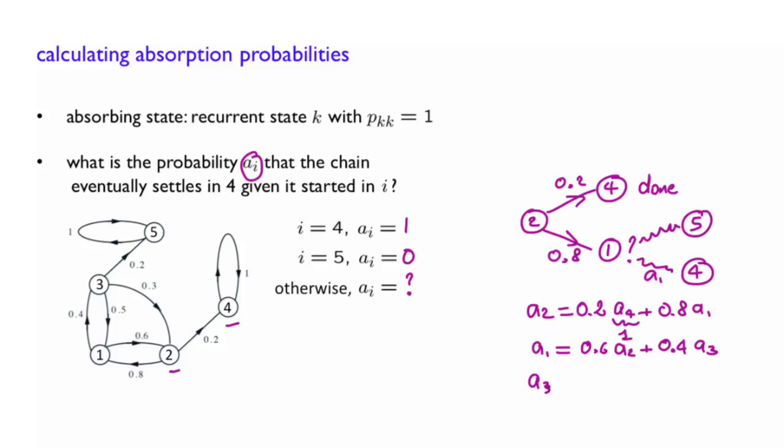If initially you start with a3, what can happen next? Again, with probability 0.3, you will end up in state 2. And there, a of 2 is the probability of interest. Or with a probability 0.5, you go to state 1, and in that case you get a of 1.